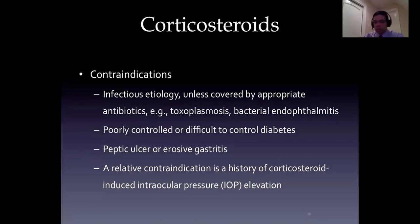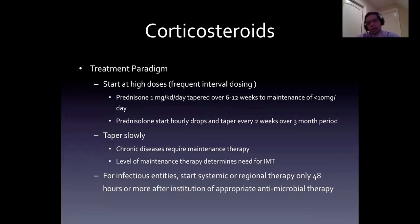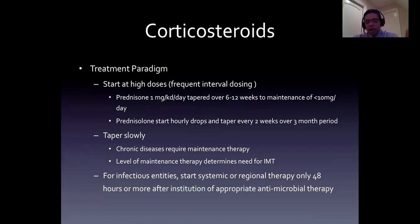Contraindications for corticosteroids include mainly infections - treat the infection first and then start corticosteroids. People who have pre-existing peptic ulcers or erosive gastritis are relative contraindications. Poorly controlled diabetics are definitely a contraindication. Intraocular pressure elevation means you have to monitor those patients very carefully. The paradigm I want to stress is to start at high doses with frequent interval dosing of topical steroids initially - every hour - and then gradually taper when dealing with anterior uveitis. Anterior uveitis is by far the most common condition the general practitioner will see in day-to-day practice.